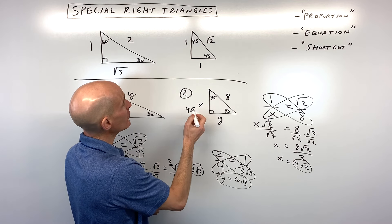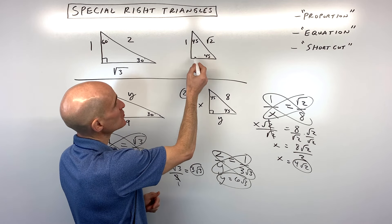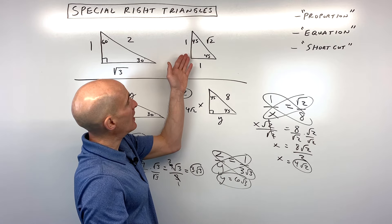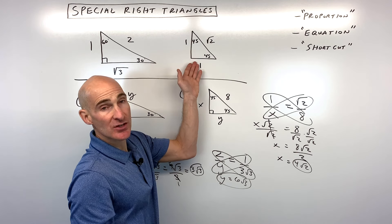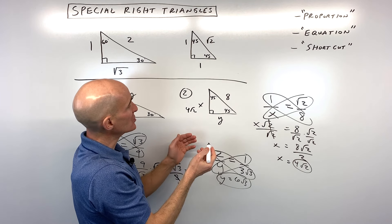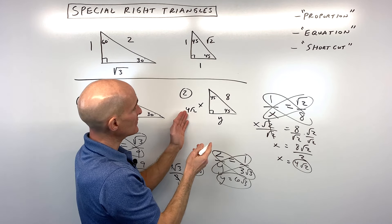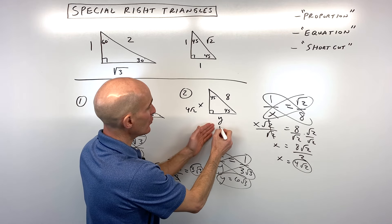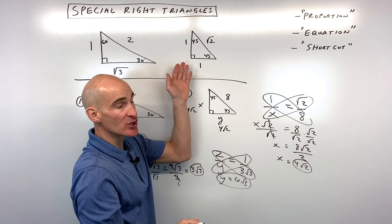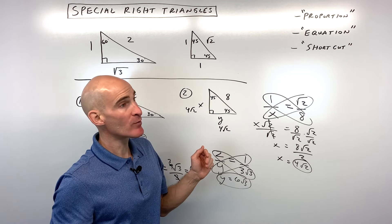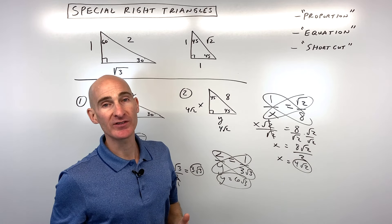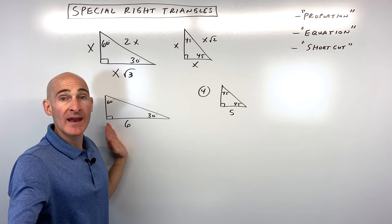Since both legs in a 45-45-90 triangle correspond to the side labeled 1 in the reference triangle, the two legs are always congruent. So if x is 4 square root of 2, we know that y is also 4 square root of 2. You can also form another proportion using those corresponding sides and get the same result.